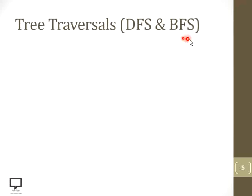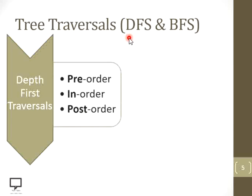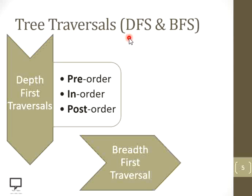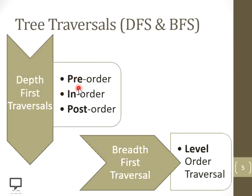Now let's start with tree traversal. There are basically two techniques with which we can traverse a binary tree: depth first traversal and breadth first traversal. In depth first traversal, we can traverse a tree in three different orders based on the position of the root node. You will get all the details of these traversal techniques in my previous video. Breadth first traversal is nothing but level order traversal, where we traverse a tree level by level.